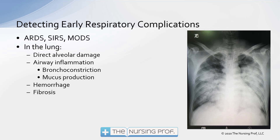That systemic inflammation then causes multi-organ dysfunction syndrome — MODS — and we start seeing our other organs begin to fail. So even though the person inhaled the virus and it started in the lung, it's going to move throughout the body, partly as a result of this systemic inflammation and partly because the virus replicates and spreads. In the lung, we're going to have direct alveolar damage — the virus itself damages the alveolus. Whenever there's damage, there will be an inflammatory response causing bronchoconstriction and mucus production, which makes it difficult to ventilate the patient.